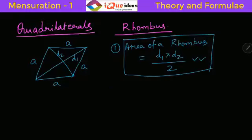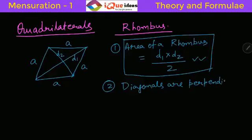Then there is one important property related to the diagonals. Diagonals are perpendicular to each other. So the angle between them, angle between the diagonals is 90 degrees.